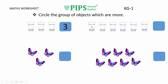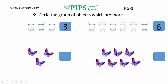Let's count how many objects are in the second group. 1, 2, 3, 4, 5 and 6. How many objects are in the second group? There are 6 objects in the second group. So KG1 students, do you know which group has more objects? The second group has more objects. Now we will circle them, like this.